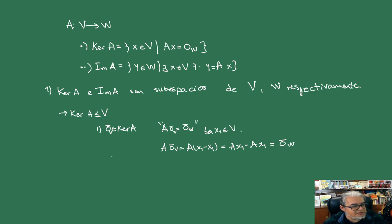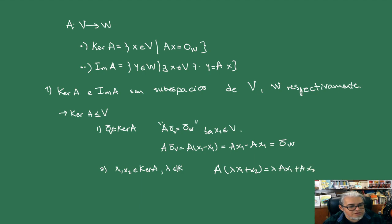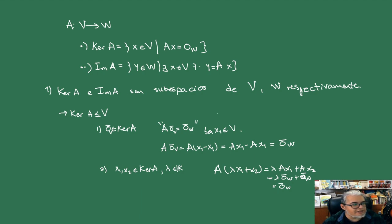Tomamos X₁ y X₂ en el kernel y λ en el campo. Vemos qué pasa con A(λX₁ + X₂): por linealidad esto es λ·A(X₁) + A(X₂). Por estar en el kernel, esto es λ·0_W + 0_W, que es (λ+1)·0_W = 0_W. Entonces el kernel es un espacio vectorial, es decir, un subespacio.